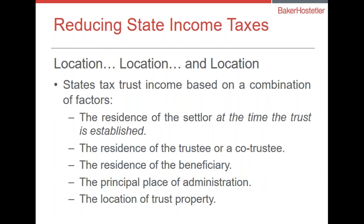The residence of a beneficiary — there's probably not a lot you can do about that. If your kids are living in California or New York because they love the weather or the vibe, you can't do much about their location. However, the principal place of trust administration is something you can control — you could pick a trust company with administration in a key jurisdiction like Nevada, South Dakota, or Delaware. The location of the trust assets is also something you can influence, though harder with real estate; entity ownership can help work around that issue.